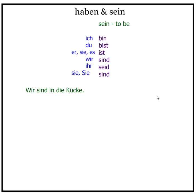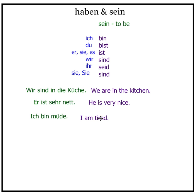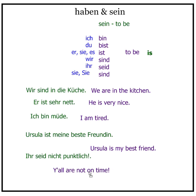Wir sind in die Küche — we are in the kitchen. Er ist sehr nett — he is very nice. Ich bin müde — I am tired. Sein is translated as 'to be', but you might want to think of it as 'is'. Ursula ist meine beste Freundin — Ursula is my best friend. Ihr seid nicht pünktlich — you're not on time.